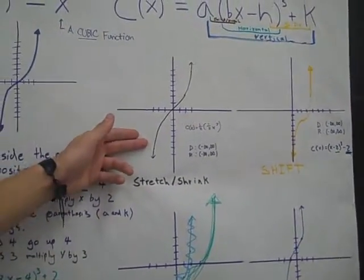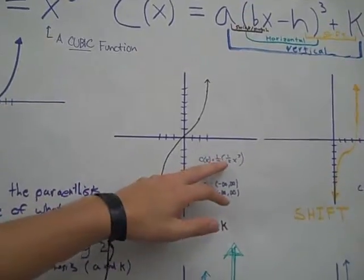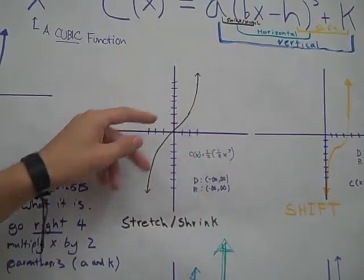The stretch and shrink is demonstrated here where the graph is shrunk because there's one half, and that affects the a and the b.